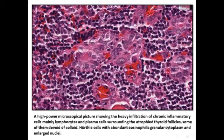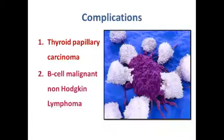هنا على الـ right side هي Hürthle cell - very big. هذا سوي blood cells - اللي رح يتميز عن الـ spheroidal follicular cells اللي تشوفها بالـ center - عندي الـ cytoplasm والـ nucleus وال N/C ratio. هنا normal follicular cells - you can see here in the center الـ follicles are small and cuboidal. هنا larger more eosinophilic granular وincreased N/C ratio - هاي الـ Hürthle cells.